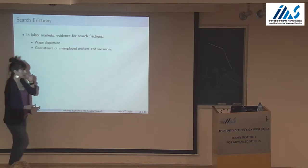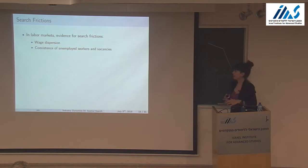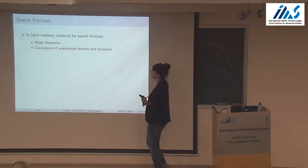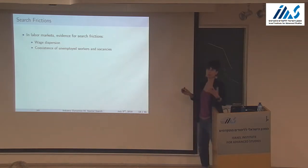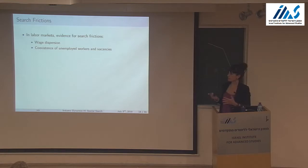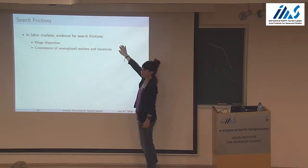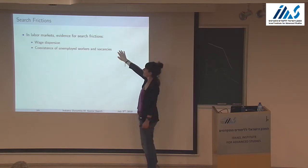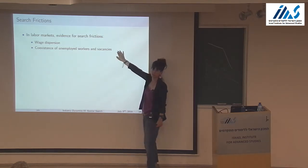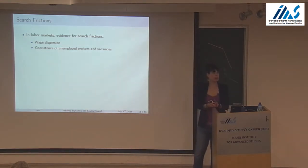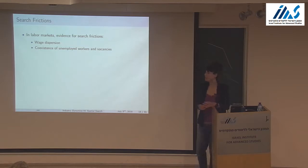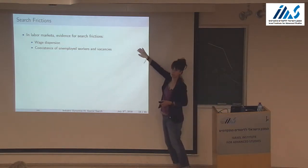The third fact is about search frictions. Unlike the taxi literature, we follow the labor literature. The facts used to argue for search frictions in labor markets are two: first, wage dispersion — observationally similar workers get different wages; second, coexistence of unemployed workers and vacancies. We see at the same time someone looking for a job and a job being open, so they're not meeting, indicating a friction.